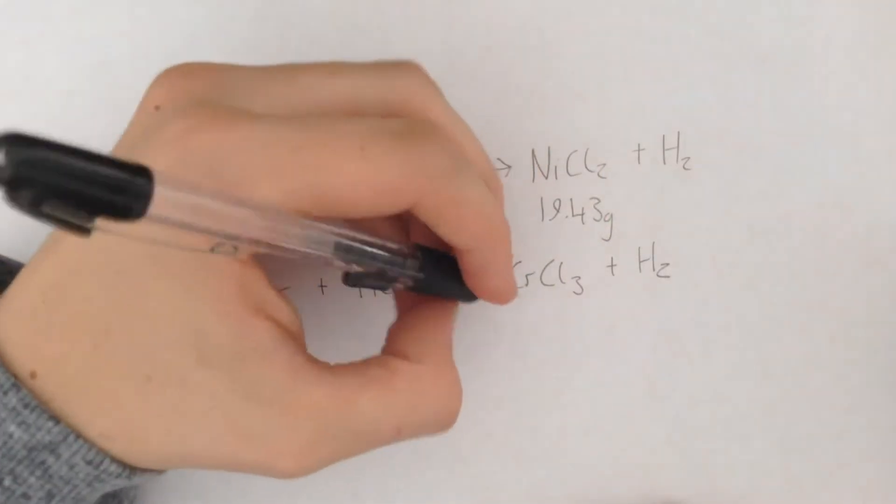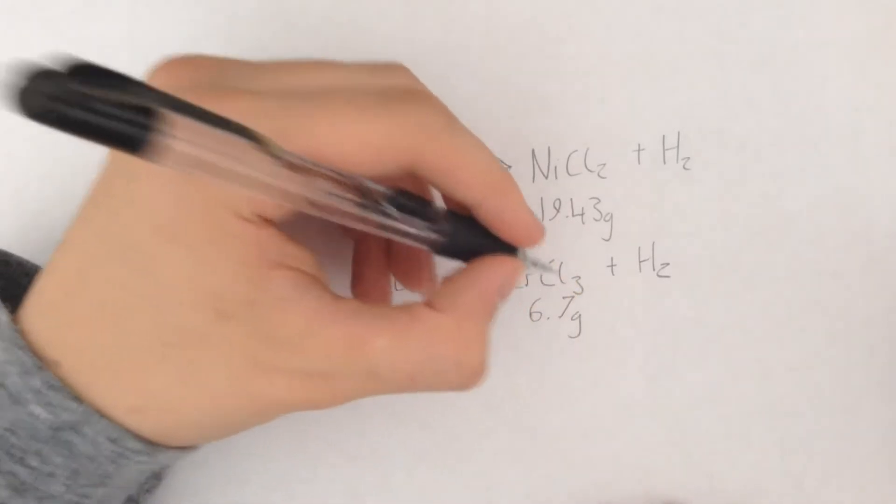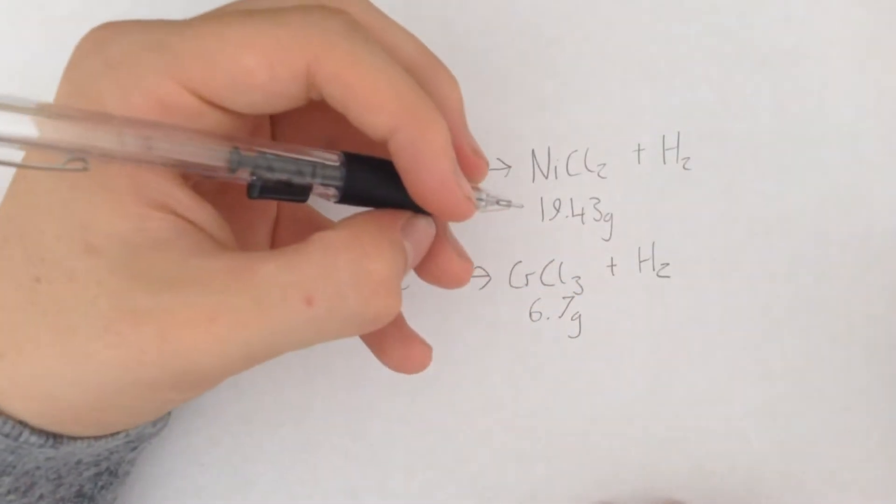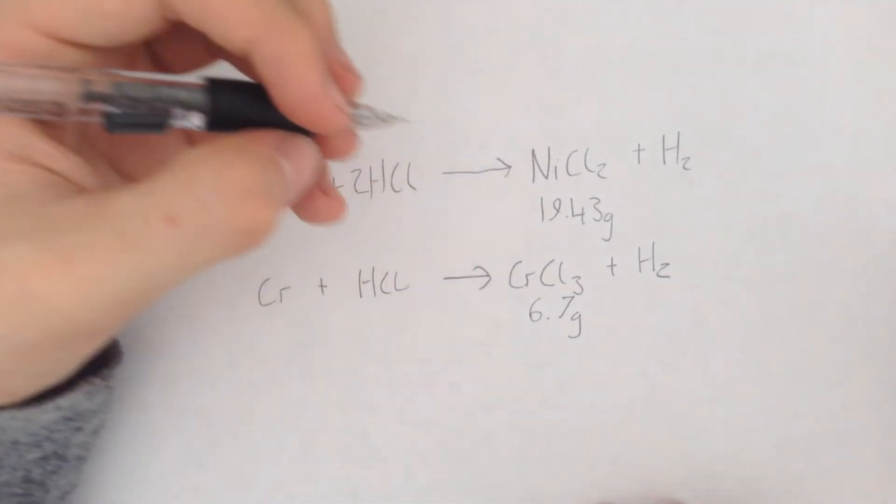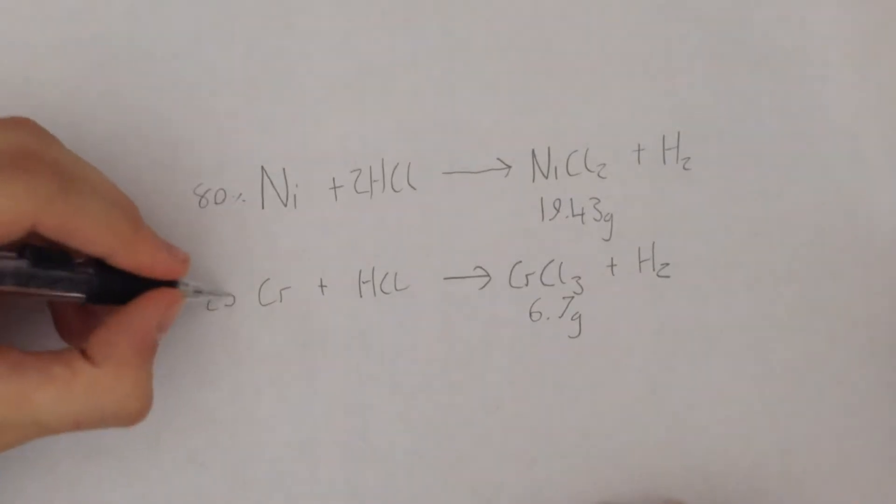We're expecting to see 19.43 grams of nickel chloride and 6.7 grams of chromium chloride and this is due to the 80 to 20% ratio between nickel and chromium.